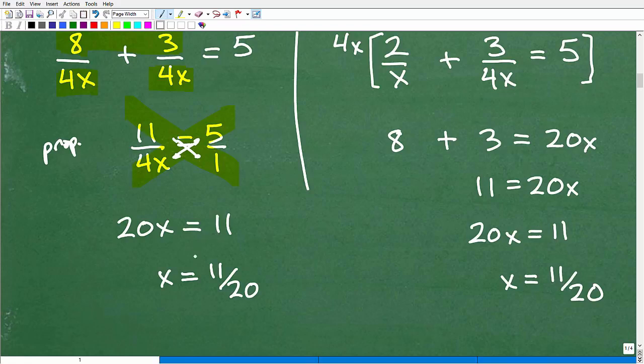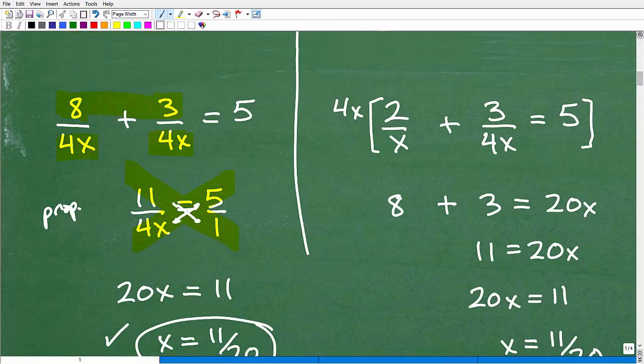I got 20x is equal to 11, and now to solve for x, I divide both sides of the equation by 20, and I have x is equal to 11 over 20. So this is one approach you can take to solve this rational equation.